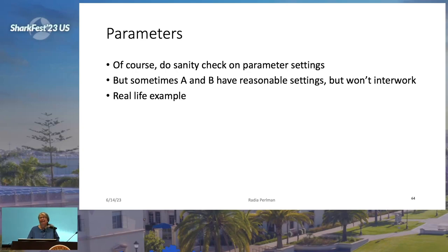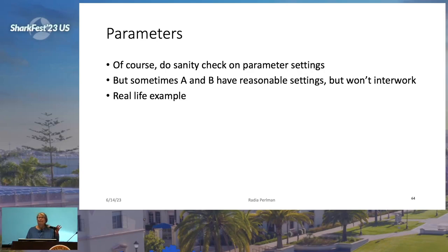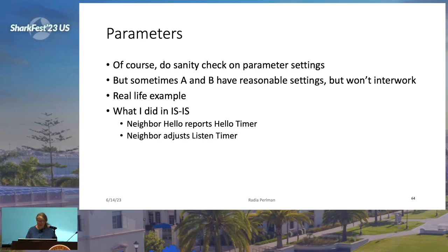In IS-IS, the hello message has a hello timer — the way you get to know your neighbors is you say, 'Hi, I'm Radia, expect to hear hellos from me every 30 seconds,' and your neighbor multiplies that by three. Later, when the internet people decided they wanted a link state protocol too, they basically mostly copied IS-IS and made it more complicated for no good reason — called it OSPF. They noticed the hello timer in IS-IS and put it into OSPF too, but they didn't quite understand the purpose. In OSPF, when you receive a hello from a neighbor saying 'I send hellos every 30 seconds,' OSPF compares that value with your own configured hello timer, and if they're not identical, you refuse to talk. I've been giving them a hard time about this for years — it makes the network very brittle.